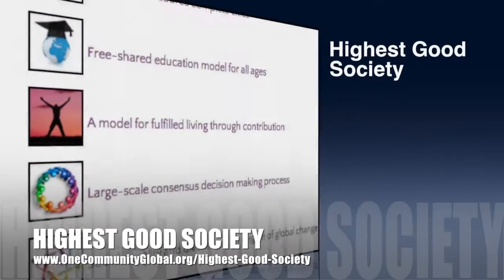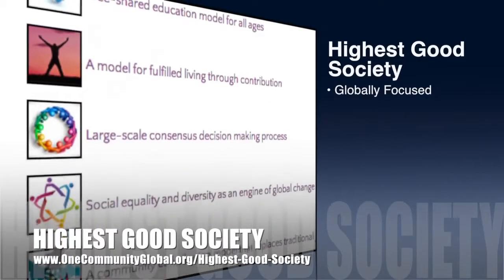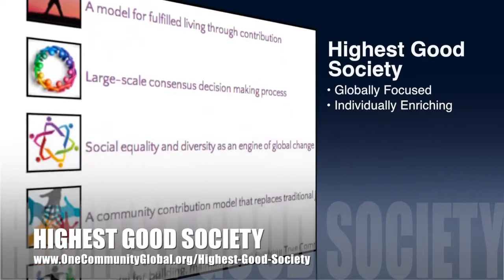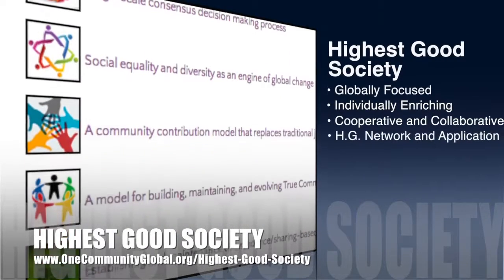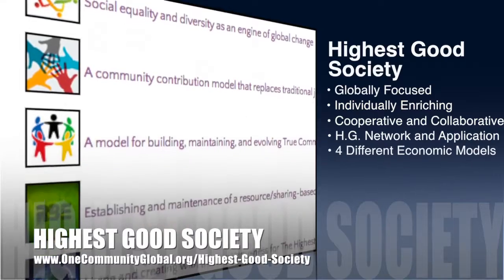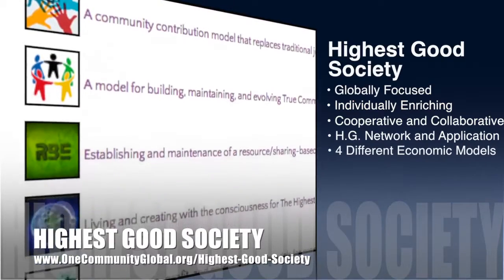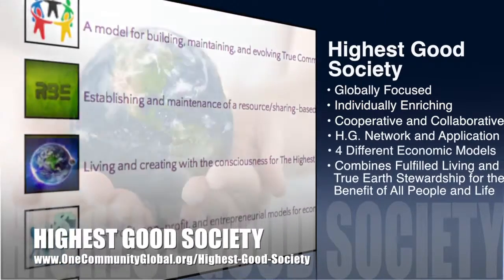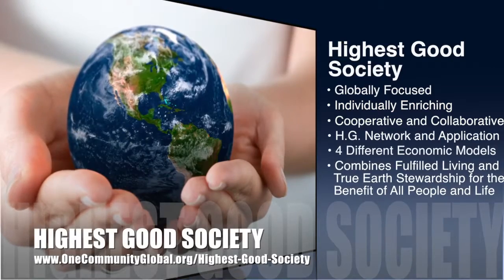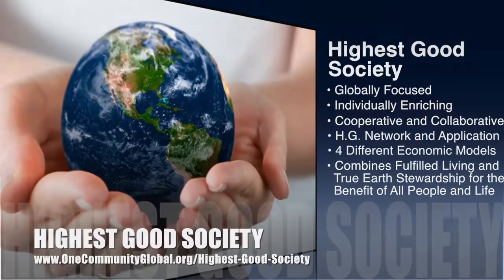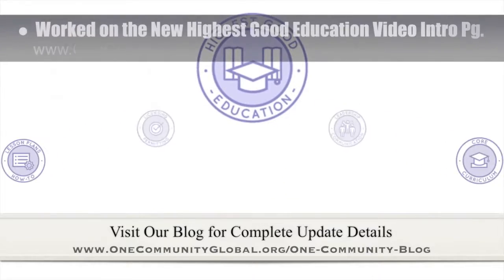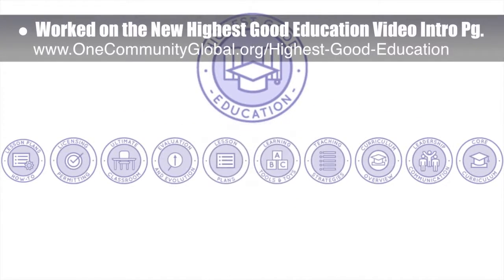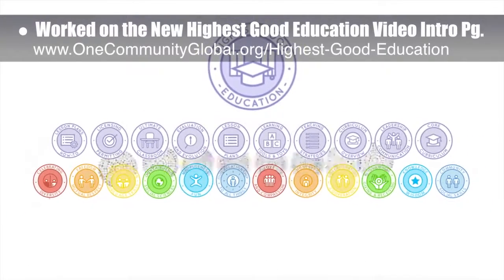One Community's approach to highest good society is globally focused, individually enriching, cooperative and collaborative, includes a highest good network and application, four different economic models, and combines fulfilled living and true earth stewardship for the benefit of all people and all life on this planet. This week the core team finished another round of developing the new highest good education video intro, shown here.